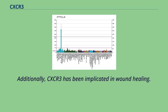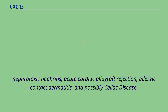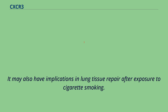Additionally, CXCR3 has been implicated in wound healing. CXCR3 has been implicated in the following diseases: atherosclerosis, multiple sclerosis, pulmonary fibrosis, type 1 diabetes, autoimmune myasthenia gravis, nephrotoxic nephritis, acute cardiac allograft rejection, allergic contact dermatitis, and possibly celiac disease. It may also have implications in lung tissue repair after exposure to cigarette smoking.